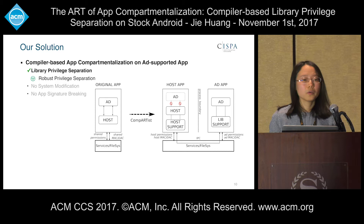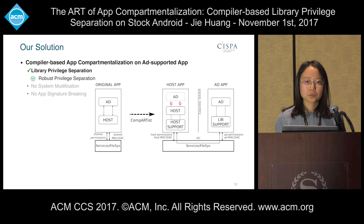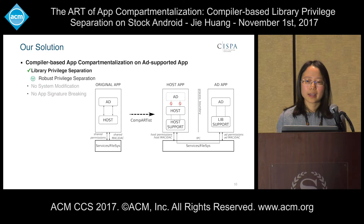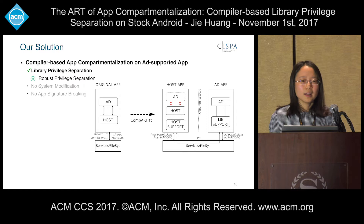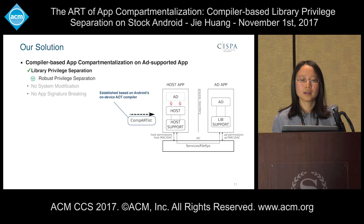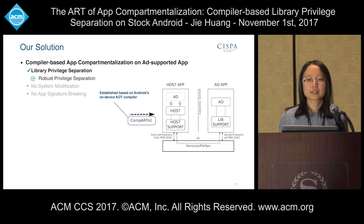This is an overview of our system. At the beginning, we have an ad-supported app. Then we run this app through our Compartist tool. The result will be two isolated applications — one host application and one advertisement application. Those two isolated applications can communicate with each other through an inter-process communication channel. Our Compartist tool is an extension of Android's DEX-to-OAT compiler. This customized compiler operates completely on the application layer at compile time, so no system modification and app signature breaking is needed in our solution.